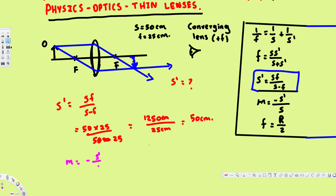Plugging in the values: m = −50 / 50 = −1. The negative sign tells us the image is inverted, and the magnitude of 1 tells us the image height is exactly the same as the object height. That's how we solve this type of problem — I hope this helps, thanks for watching.